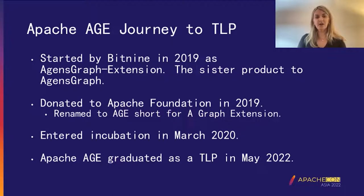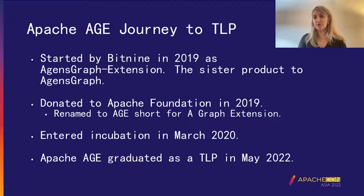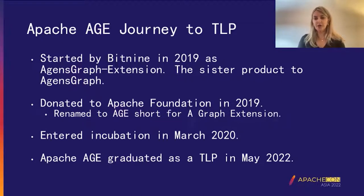In this slide, we'll talk about the Apache AGE journey toward becoming a top-level project. This project started by Bit9 in 2019 as the AgentsGraph extension, which is a system product to AgentsGraph. Back in 2019, we donated the project to the Apache Foundation and went through renaming the project to AGE, which stands for A Graph Extension. After the donation, we entered the incubation process in March 2020, and after successfully finishing everything, Apache AGE graduated as a top-level project in May 2022.